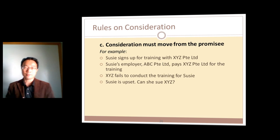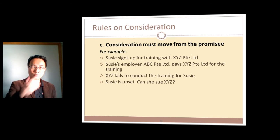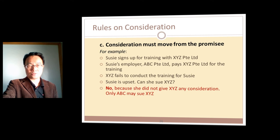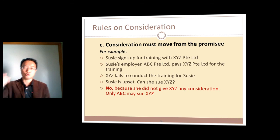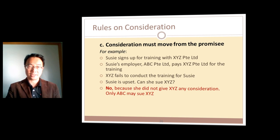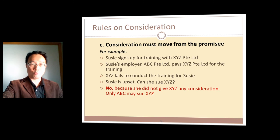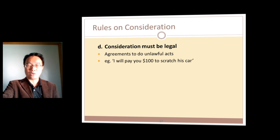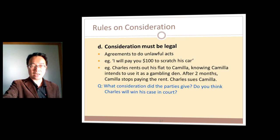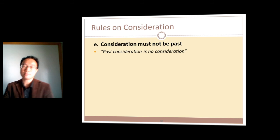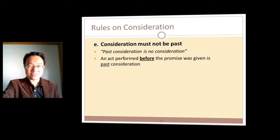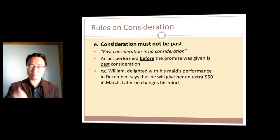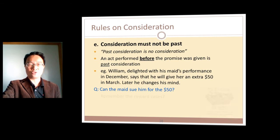Consideration must also move from the promisee — the person providing the value must be the one who provides the promise. For example, if Susie signs up for training but the employer pays for it, and the company fails to conduct the training, it is not Susie who can sue but the company that provided the money. Additionally, consideration cannot be past — if someone did great work in December and you promise extra pay in March, it's not binding because the act is already history.